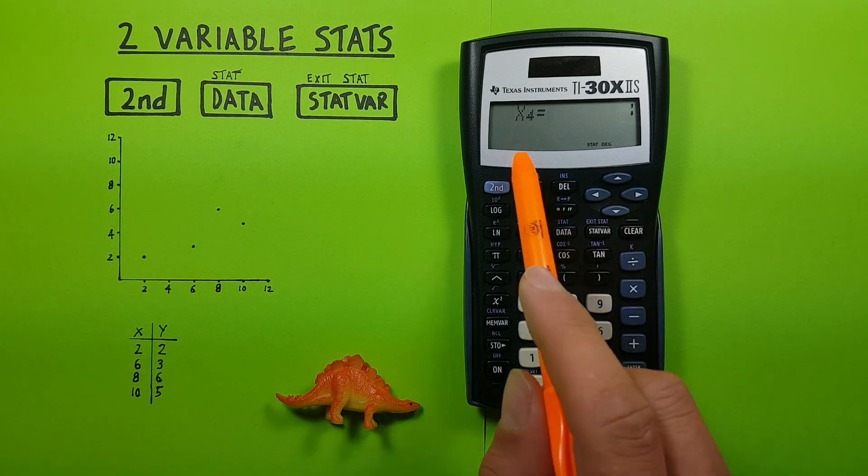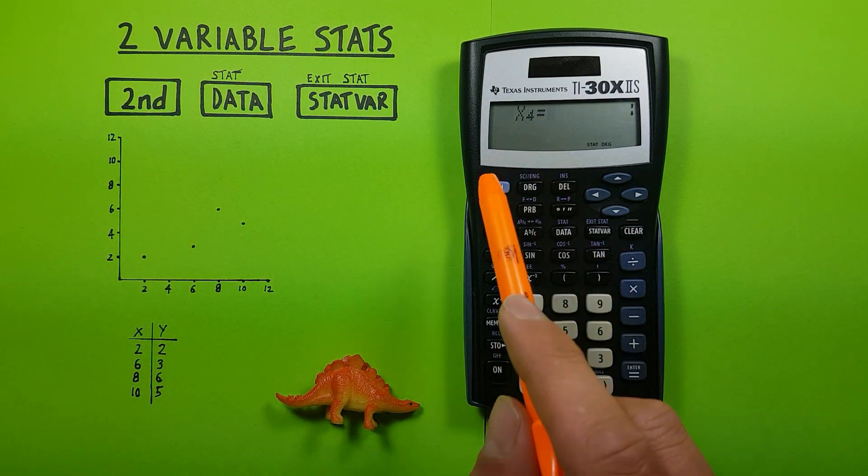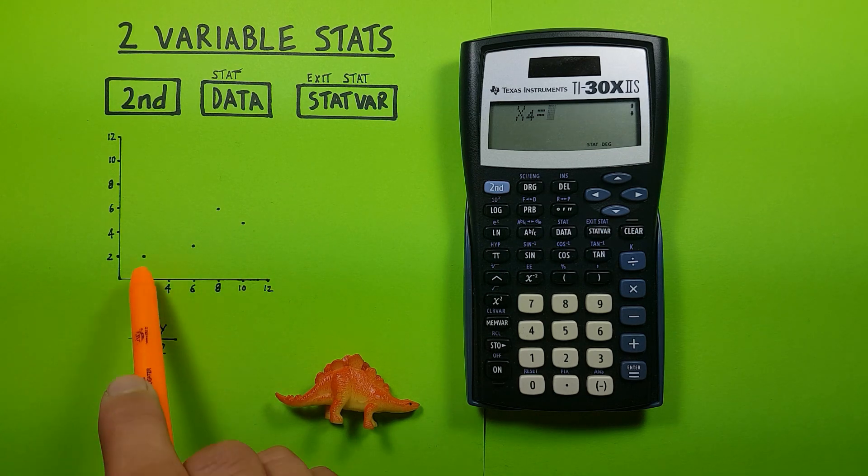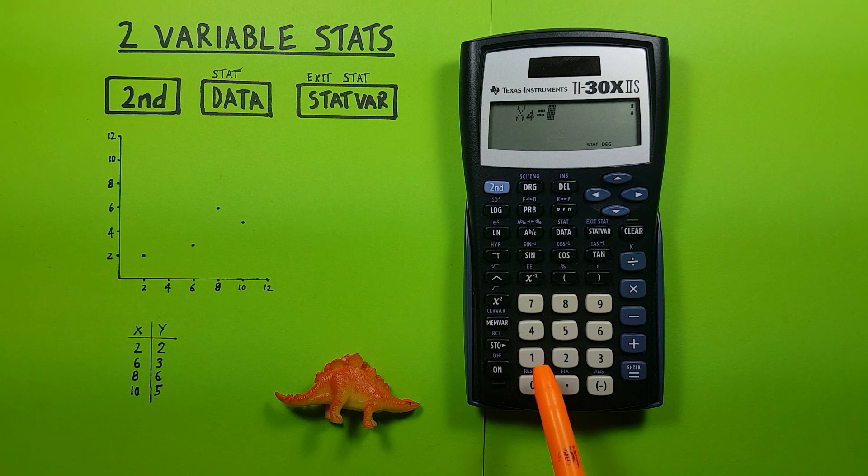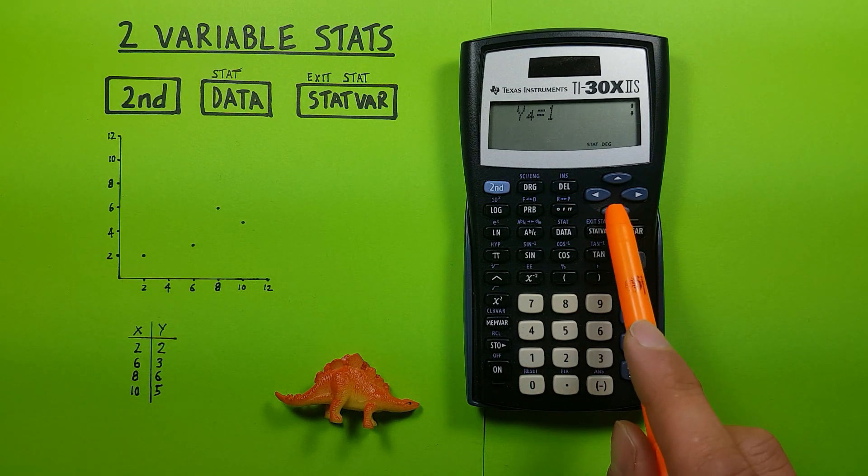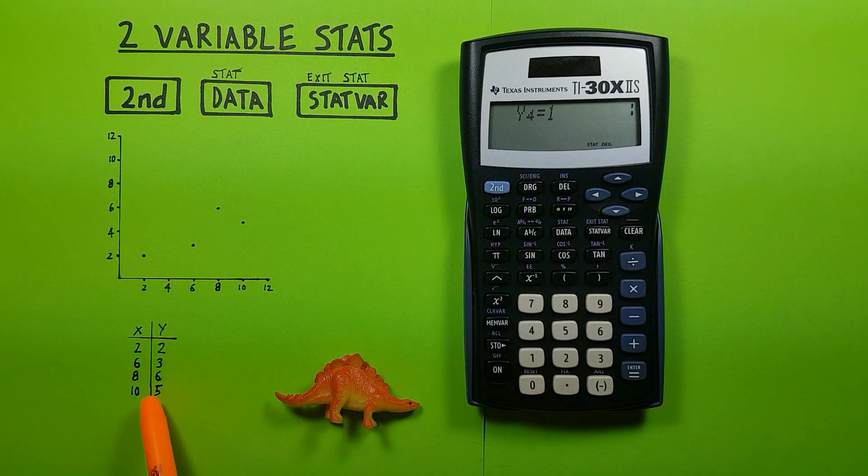Down again x4, you can see this one on the graph here. We've been graphing all these points from the graph. So x4 is 10, down, y4 is 5.